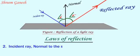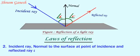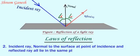Incident ray, normal to the surface at point of incidence, and reflected ray all lie in the same plane.